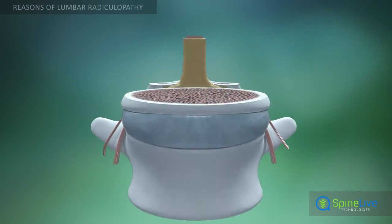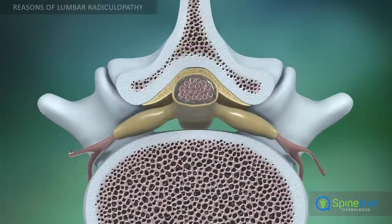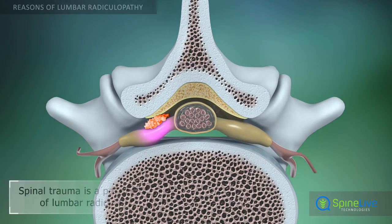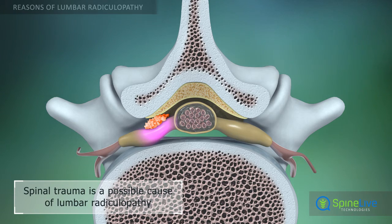Lumbar radiculopathy can develop due to tumors that grow in the spaces between the spinal cord and vertebrae.